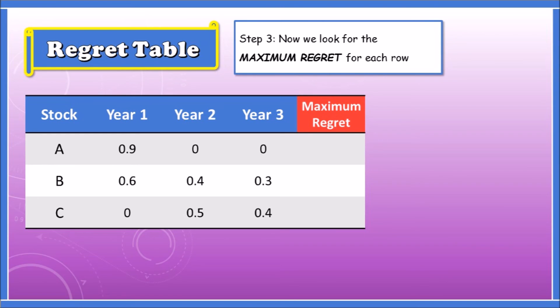Looking at stock A, we can see that the highest value is 0.9. The highest in stock B is 0.6, and looking at stock C, the highest there is 0.5.